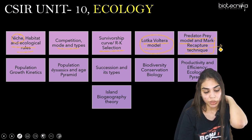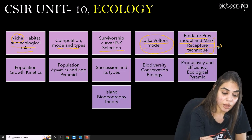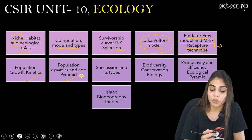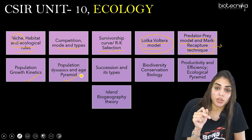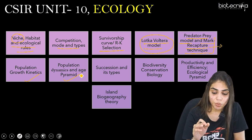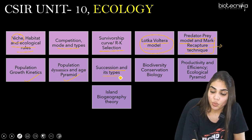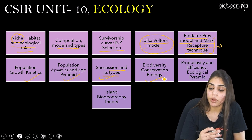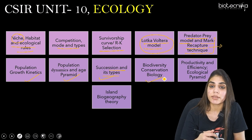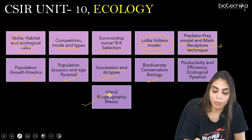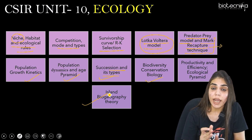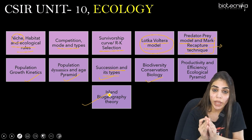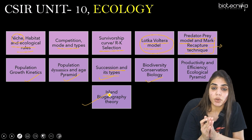The next is population growth kinetics — again a very important topic. Population dynamics and age pyramids include the survivorship curve, age pyramids, and succession. Biodiversity conservation biology — know how to calculate NPP, GPP, the formula for productivity and efficiency, and the ecological pyramid. The last is island biogeography theory — both theory and experiment-based questions are asked, so understand the concept well.